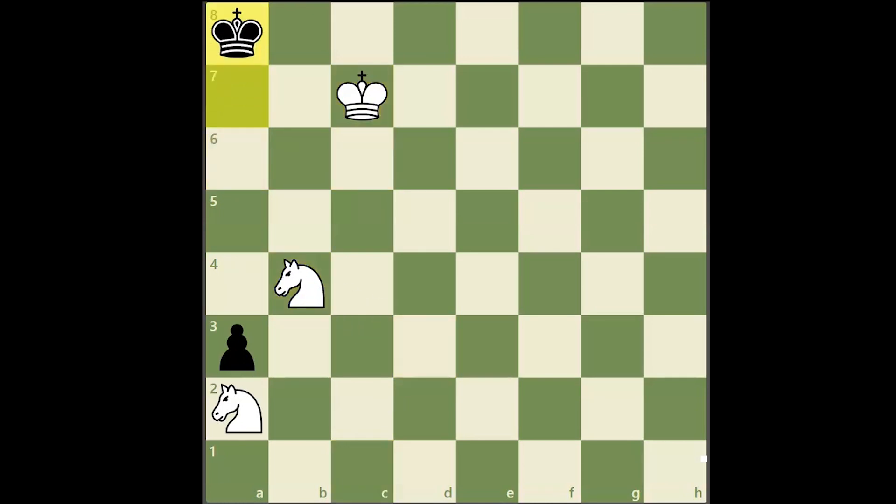We have gotten the king trapped in the a8 corner, but we have to move our blockading knight when the black king is on a dark square so that it can deliver checkmate before the a pawn queens.